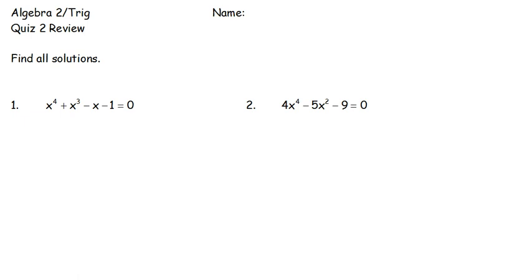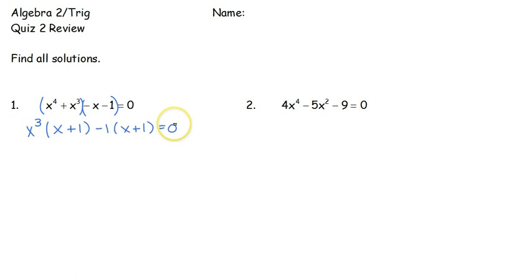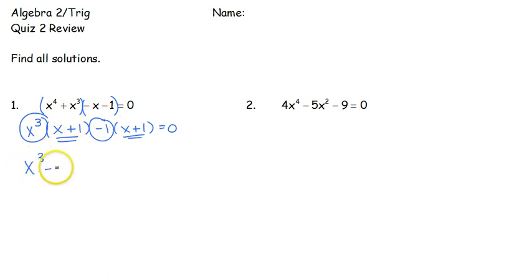If I'm going to factor, I've got 4 pieces. The only method of factoring that could work would be factor by grouping. We pull out the GCF of x cubed, and we are left with x plus 1. We pull out a negative 1, we're left with x plus 1 equals 0. Because we have that same piece on the inside, we know that factor by grouping is going to work. We take the GCFs together — we've got x cubed minus 1 as the first factor, and x plus 1 as the second factor, equals 0.